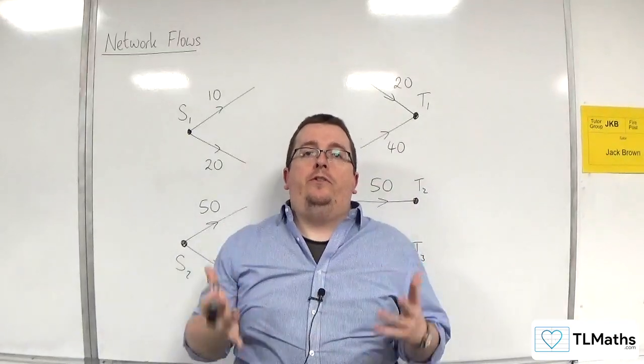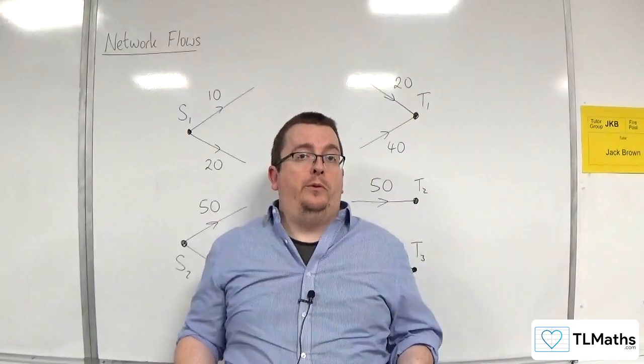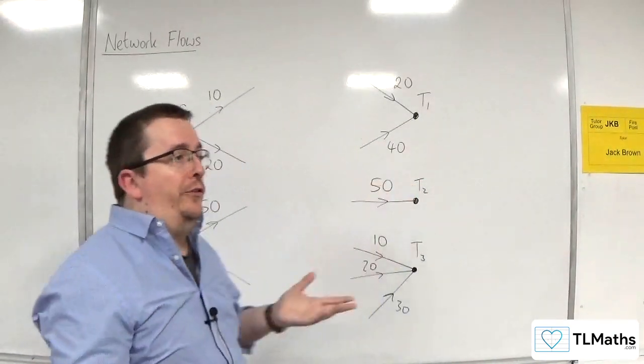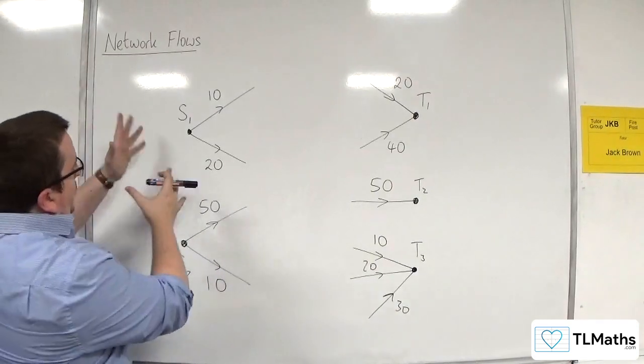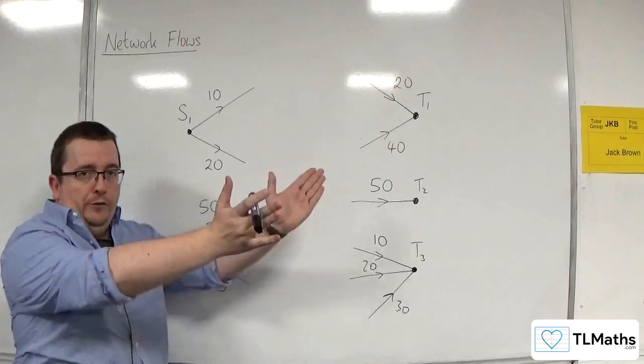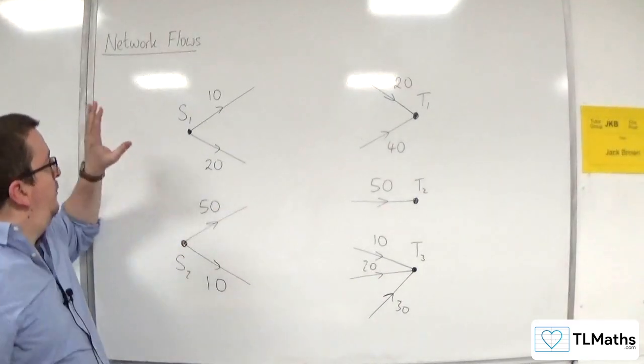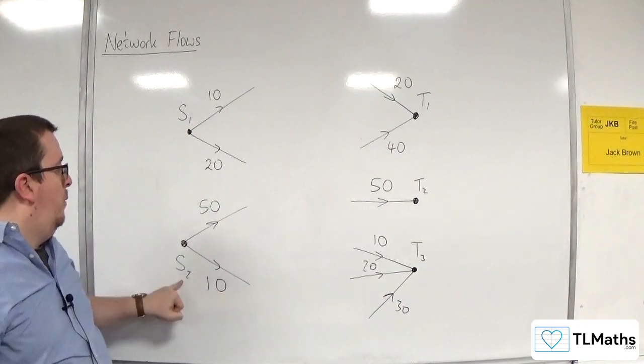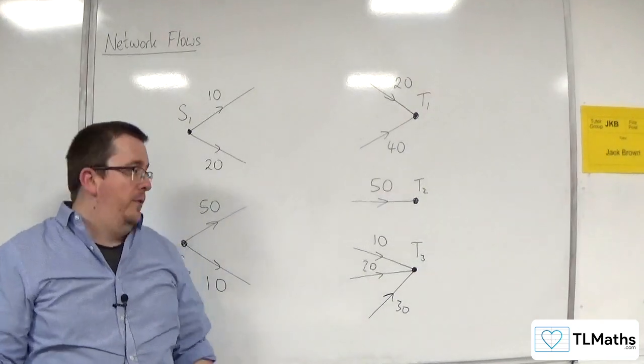In this video, I want to introduce you to super sinks and super sources. We know what a source is. A source is identified as a vertex where the flow is just going out of it. So in this case, we've got two. I've labeled them as S1 and S2. That's quite a common way to label them.